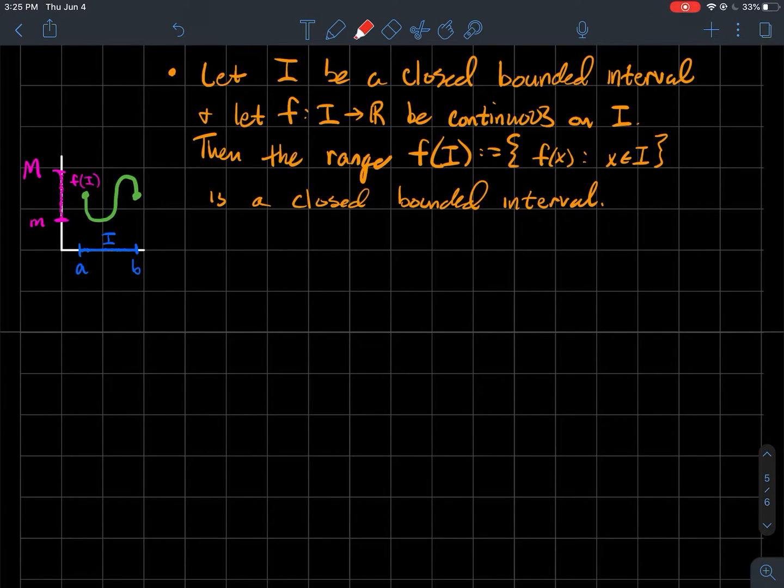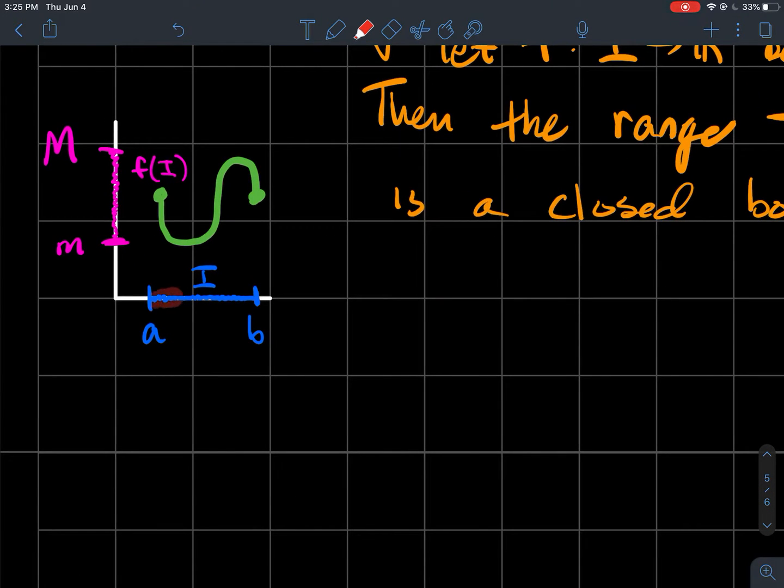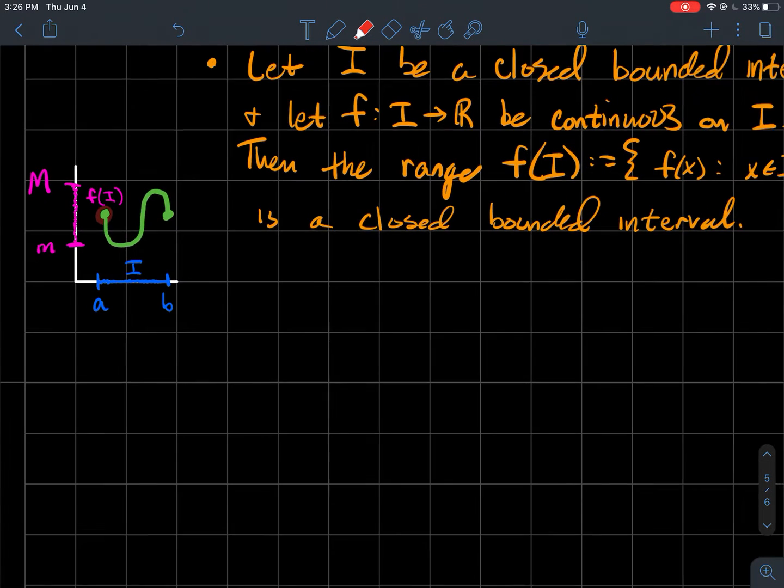I got a little picture for you here. If I is my domain, this interval that's closed and bounded from a to b including the endpoints, then if f is continuous, the range, which is up here in this pinkish color f(I), should be closed and bounded also. Notice also that I'm not saying the range is the interval f(a) to f(b). F(a) is way up here and f(b) is around there too. That's not where my range starts at.